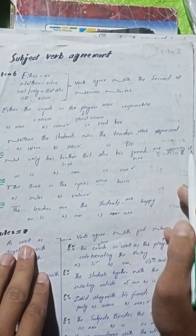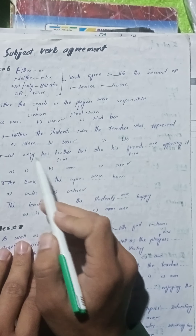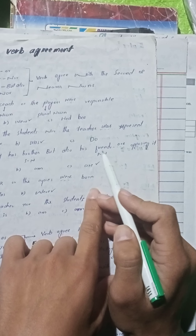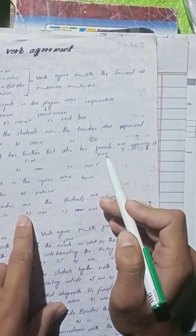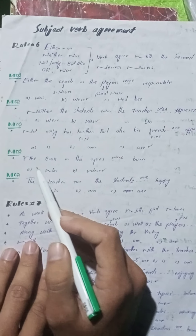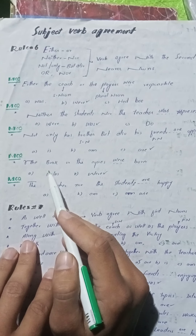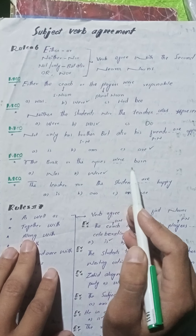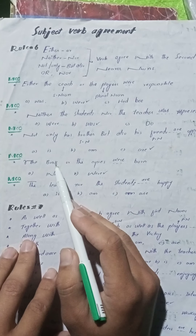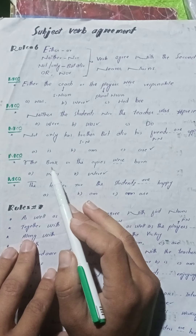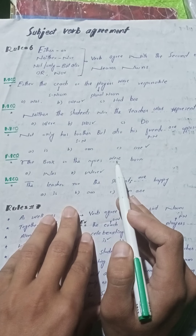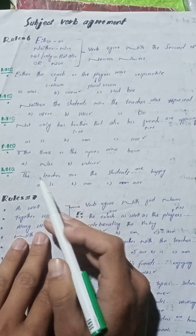MCQ number three: 'Not only his brother but also his friend ___ opposing it.' یہاں 'not only/but also' آیا ہے۔ Second noun 'friend' کو دیکھنا ہے — یہ singular ہے تو singular verb 'is' آئے گی۔ MCQ number four: 'The book or the copies ___ torn.' Second noun 'copies' plural ہے، تو right option 'were' ہوگا۔